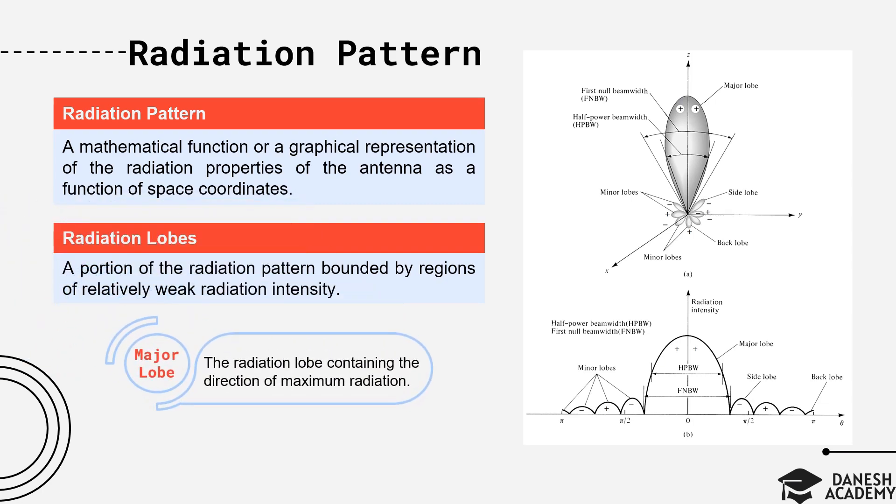Major lobe or also known as main lobe is defined as the radiation lobe containing the direction of maximum radiation, which in this case is along z-axis or equivalently theta equals zero. Similarly, minor lobe, also called side lobe, is a radiation lobe in any direction other than the intended lobe, which this definition includes a back lobe as well.